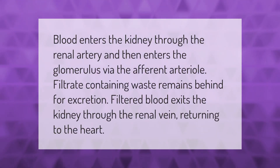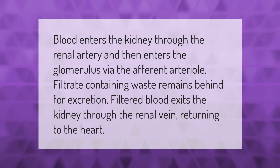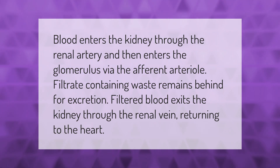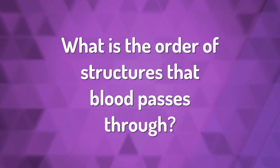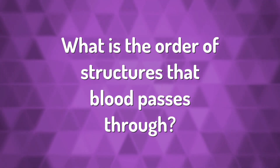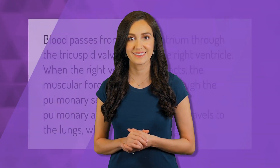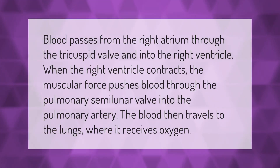Blood enters the kidney through the renal artery and then enters the glomerulus via the afferent arteriole. Filtrate containing waste remains behind for excretion. Filtered blood exits the kidney through the renal vein, returning to the heart.